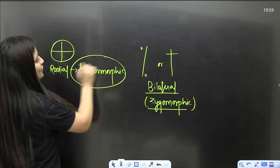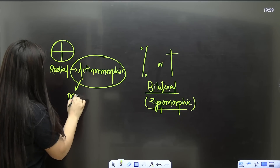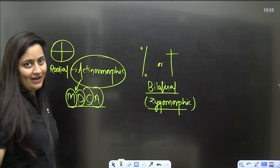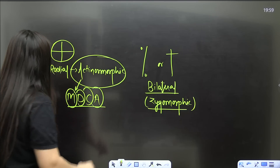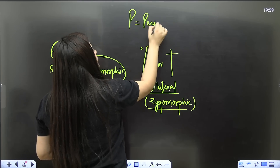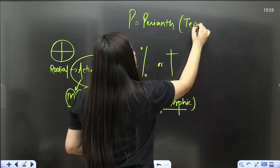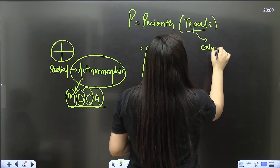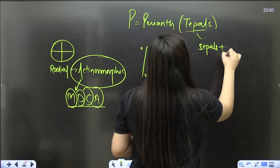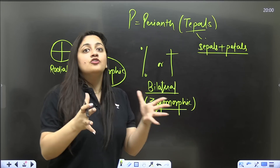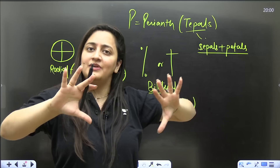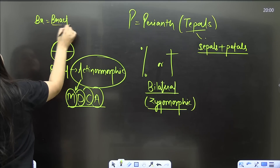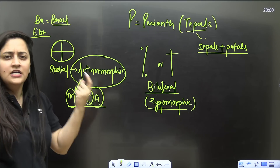Mustard, Datura, and chili are actinomorphic flowers — good examples to relate to. Sometimes you'll see the symbol P, which means perianth — a group of tepals. Tepals form when your sepals and petals are not separate but fused together. If 'Br' is written, the flower is bracteate; 'EBr' means it is ebracteate.